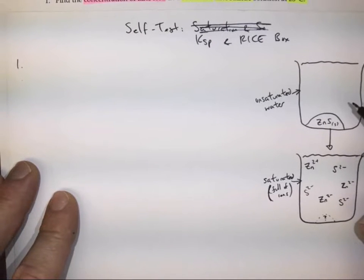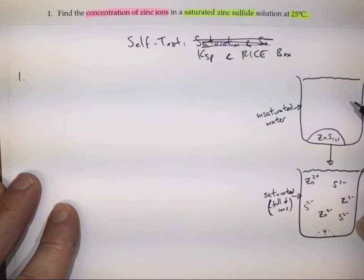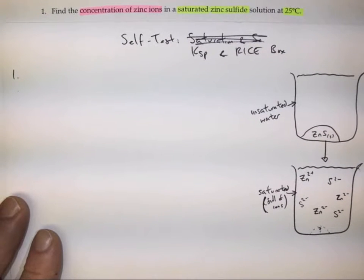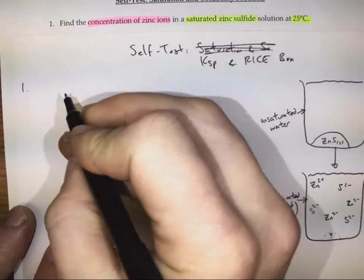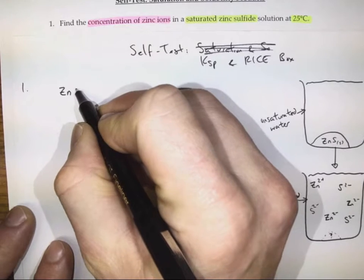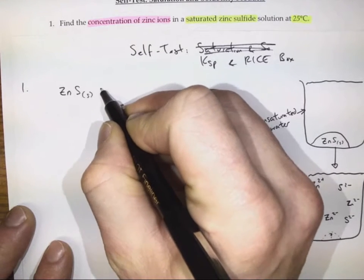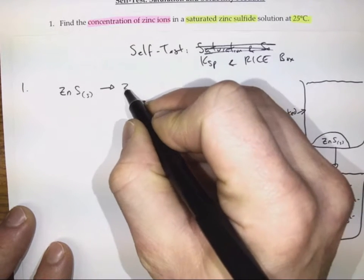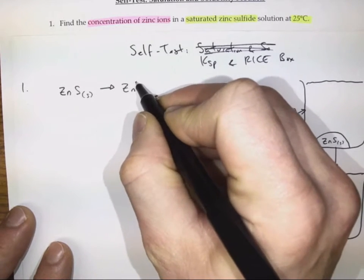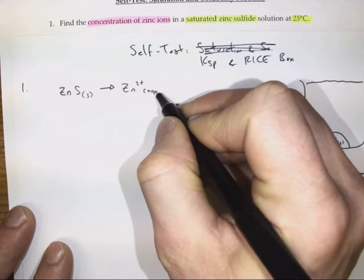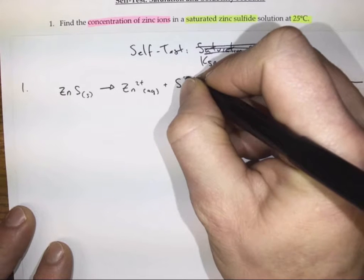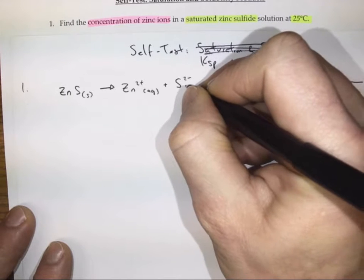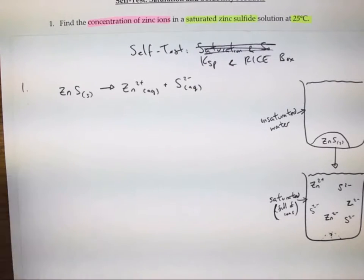So that's the diagram. I know that I had some solid zinc sulfide originally, and that dissociated and made some zinc ions which are aqueous, and some sulfide ions which were also aqueous.